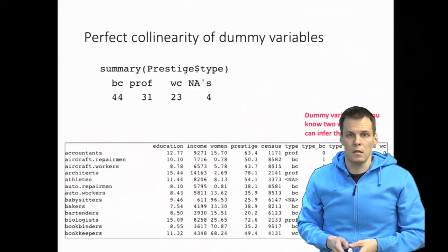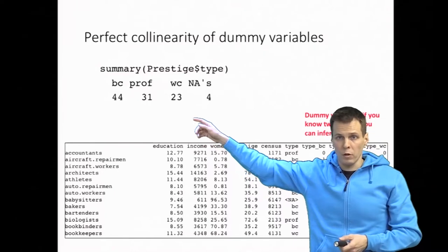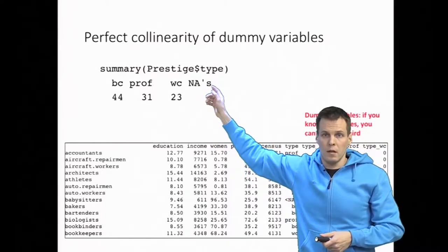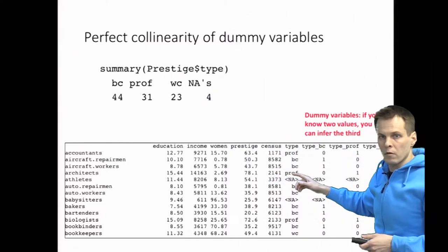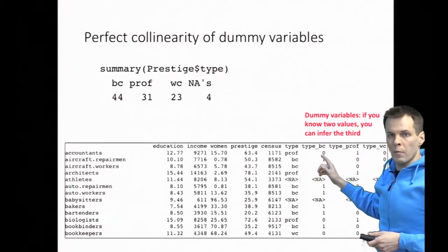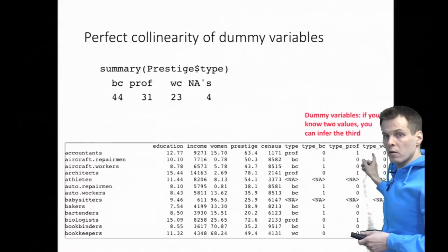Let's see what that means. Here is the data for the prestige data set and we have a categorical variable type. If we create the dummy variables for the categorical variable type, we know that if type blue collar or type professional are both zero, then the observation must be type white collar.